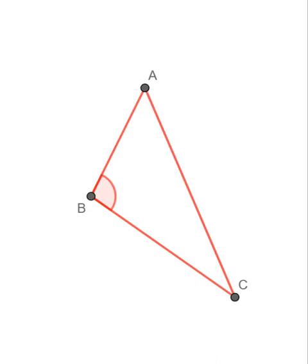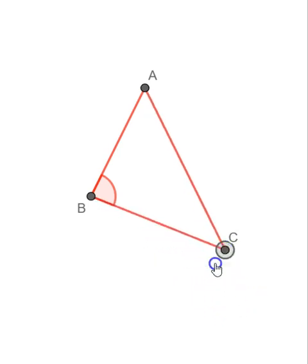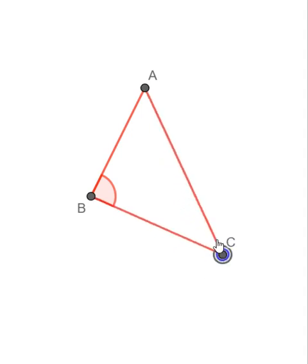Euclid's 18th proposition says that in any triangle the greater side subtends greater angle. What this means is basically that as I move a point, two of the sides' length will change.